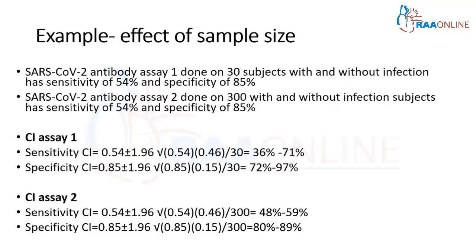The most important thing to remember is that confidence intervals are highly dependent on sample size. When you take only 10 subjects and study a particular test, you will get values all around the place. However, when you do the same test in 100 patients, you will get tighter values, and therefore you will have narrow confidence intervals, whereas with only 10 people, your points will be everywhere and you will have a wider confidence interval.